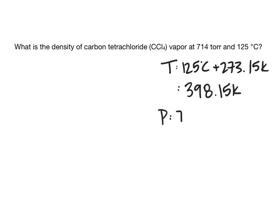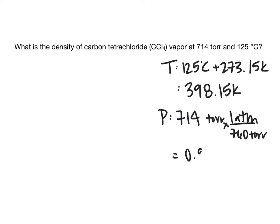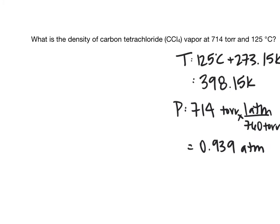The pressure is 714 torr. I'm going to use R = 0.08206 liters atmospheres per mole Kelvin, so I'll convert torr to atmospheres. There are 760 torr in one atmosphere, giving us 0.939 atmospheres. The density equals pressure times molecular weight divided by RT, so we need to determine the molar mass.